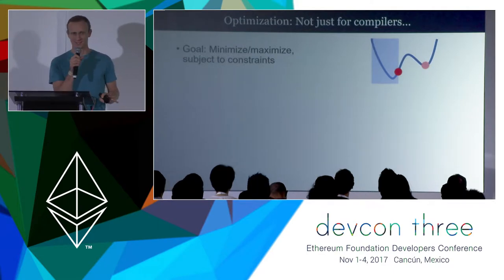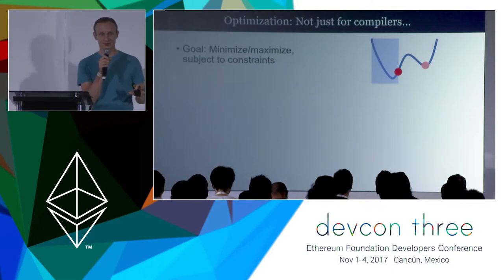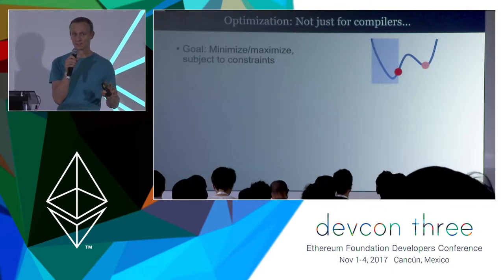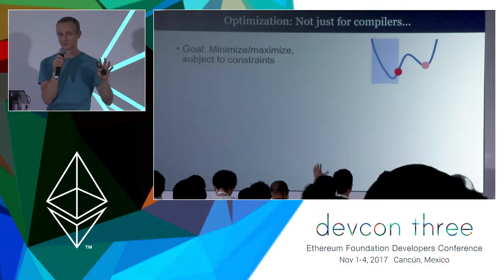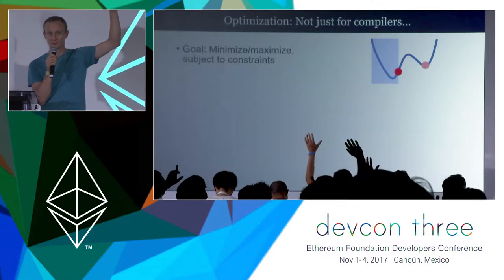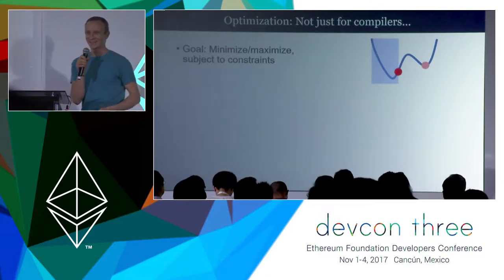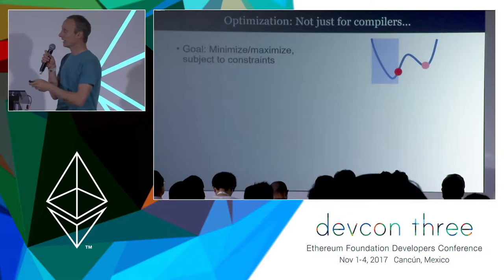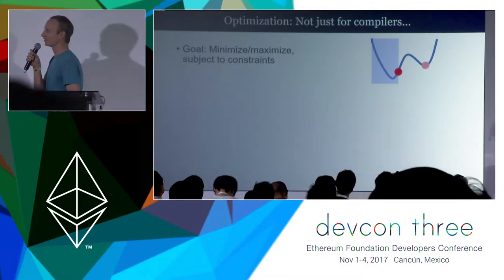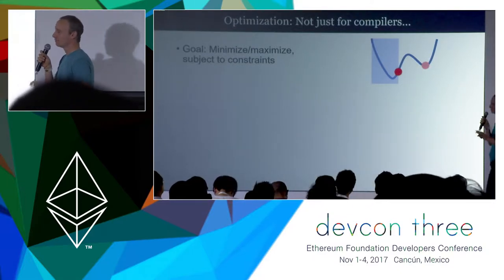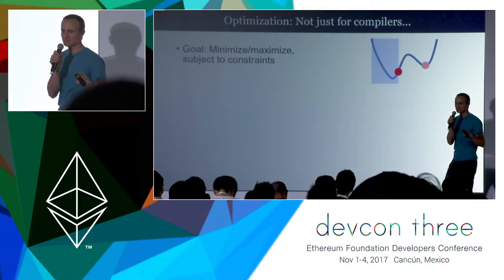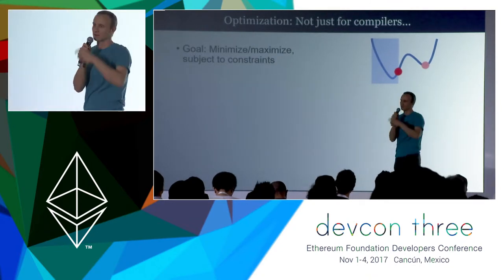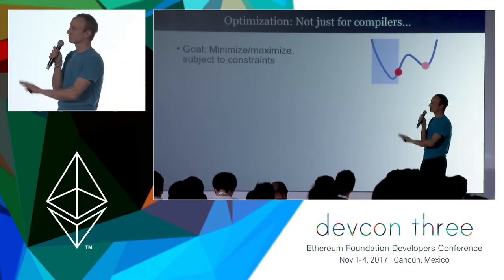So optimization — just so that we're all on the same page. Who here has heard of convex optimization before? In general, optimization problems have the goal of minimizing or maximizing some function — the dark curved line here — subject to some constraints. So we can't be in this dark blue area.